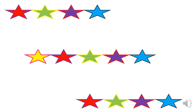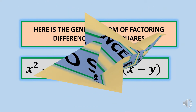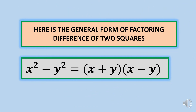Good day and welcome to this video lesson. This time we're going to discuss factoring difference of two squares. The general form is x squared minus y squared, and the factored form is equal to the quantity of x plus y times x minus y. To understand better, we're going to have some examples.